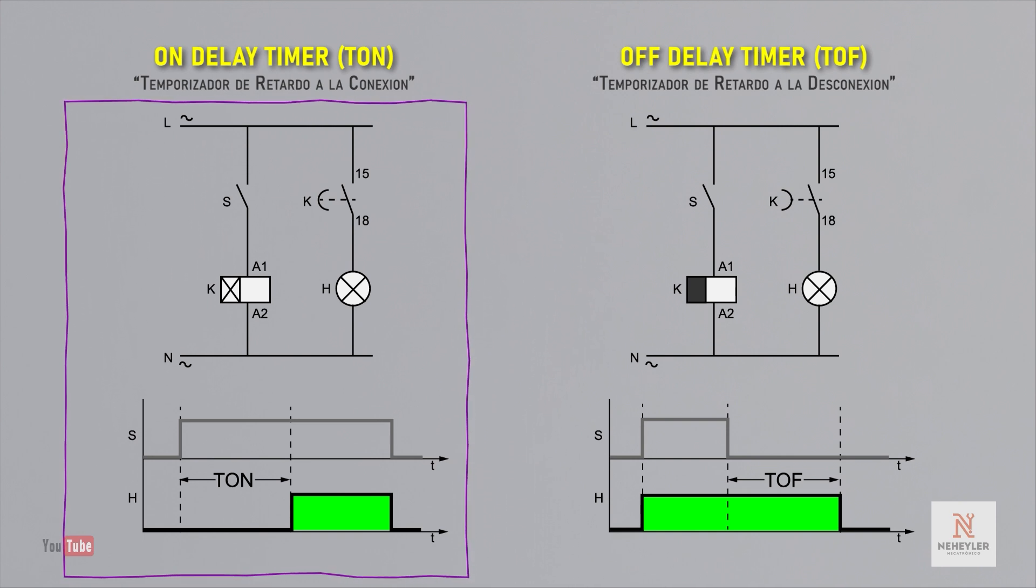If we close the S contact to energize the K coil, then the connection delay time begins to time. When this time is up, the auxiliary contact K switches and closes to allow current to pass and energize the indicator H.